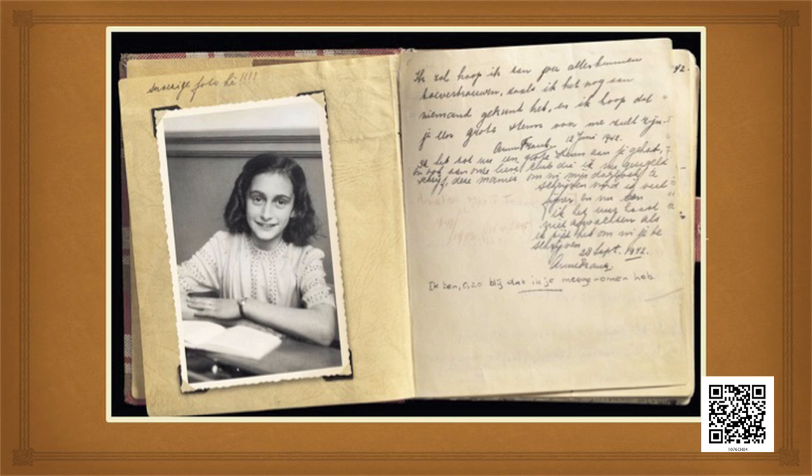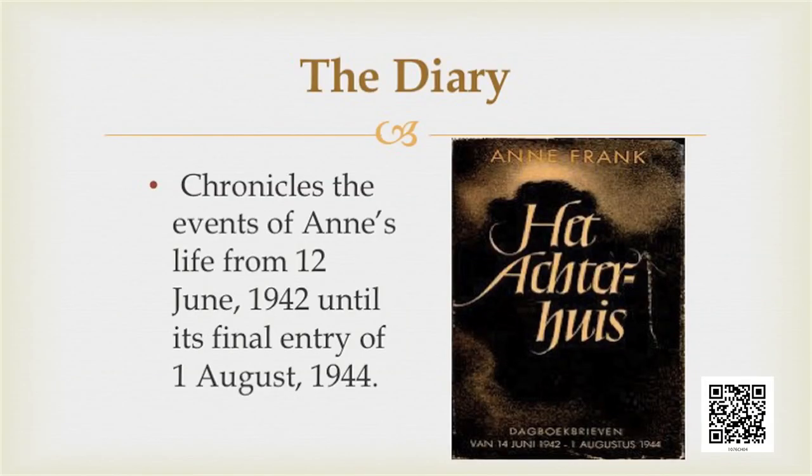We all know about Anne Frank. You must have heard about Anne Frank or read about her in history books or magazines. Let us look at the picture of Anne Frank and her diary. She was just 13 years old when she started writing her diary, beginning on 12th June 1942 and continuing till 1st August 1944. This is written in Dutch — not English. She used to write in Dutch language, and later her diary was translated into English and then into many more languages.